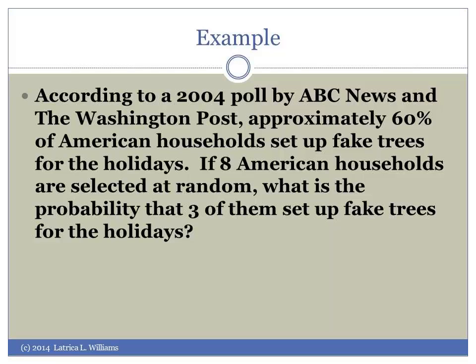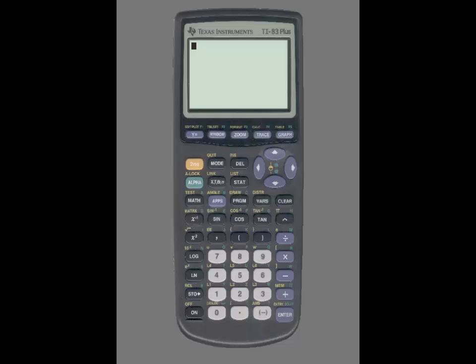If eight American households are selected at random, what is the probability that three of them set up fake trees for the holidays? To use the calculator, you'll first need to identify n, p, and x. For this example, n is 8, p is 0.60, and x is 3.